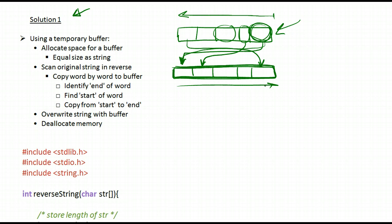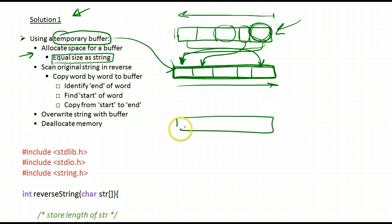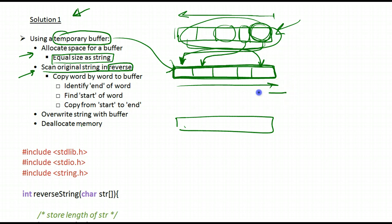The issue with this solution is that we're creating a temporary buffer, which is really unnecessary. We could find a better solution that gets rid of it. But let's look at how it works. First, we allocate space for the buffer of equal size as the string. Then we scan the original string in reverse direction, starting from the back and going to the beginning, and copy word by word to the buffer.